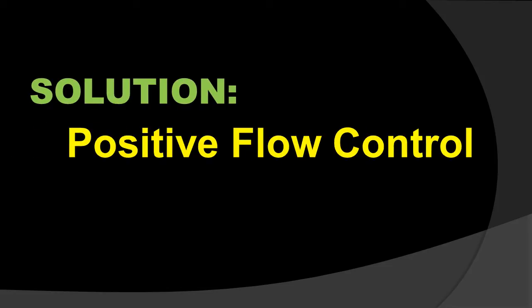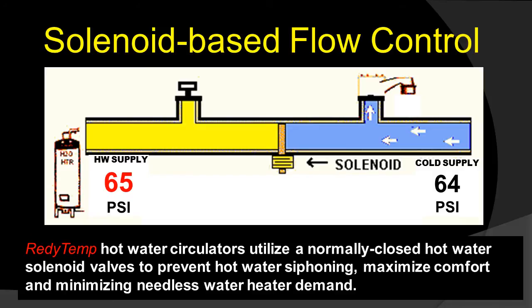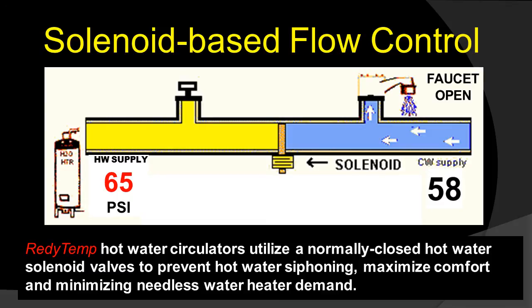Solution: positive flow control. Solenoid-based flow control — ReadyTemp hot water circulators utilize normally closed hot water solenoid valves to prevent hot water siphoning. The normally closed solenoid valve is similar to a gate valve, opening only during a momentary pump cycle and then closing. So when cold water is used, water only comes from the cold water line, maximizing comfort and preventing needless reoccurring water heater demand.